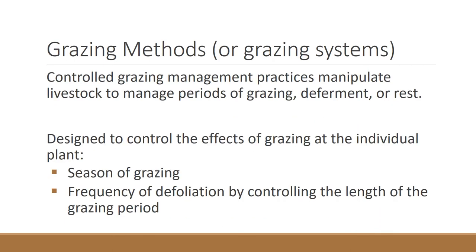Grazing methods are practices that manipulate the grazing and the periods of deferment and rest — those are the three things we manage in grazing methods. The systems or methods are designed on the idea that grazing has an effect at individual plant levels. Most of what we know about grazing methods was designed by looking at individual plants. Plants respond to grazing differently in different seasons, so the season of grazing in grazing methods is based on individual plant response. We also know that the frequency of defoliation is important, so we control the length of a grazing period in a grazing method to affect how frequently a plant is defoliated.